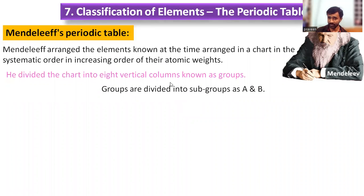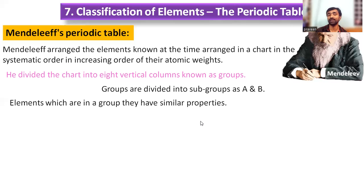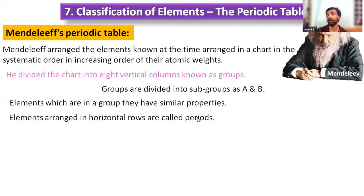Each group was further divided into subgroups called A and B. Arabic numerals are used for indicating the periods. The elements which fall into the same group share similar properties, based on their valency and chemical reactions.